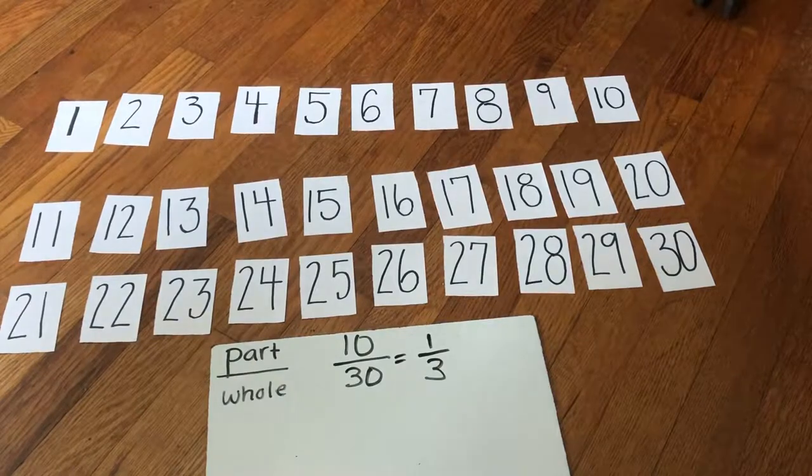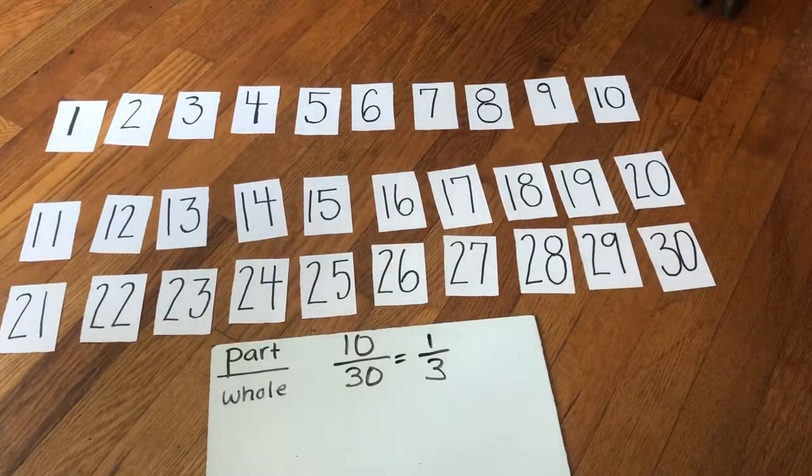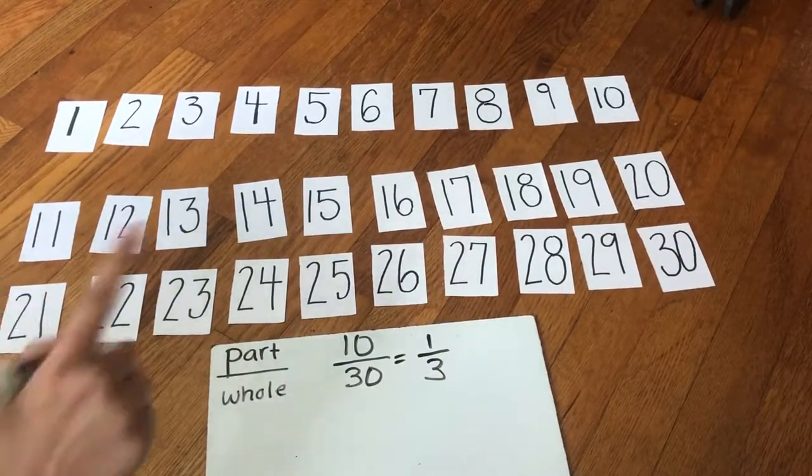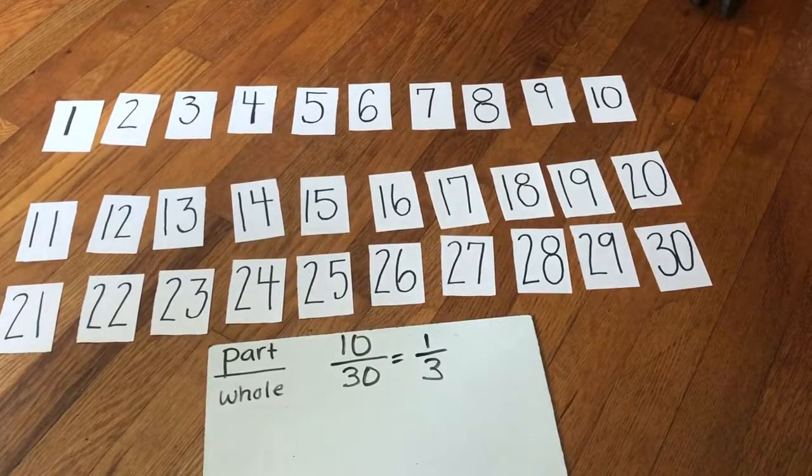So when you're doing probability, you might need to do something like this. You might need to list on your paper one through 30. You might need to draw a picture.